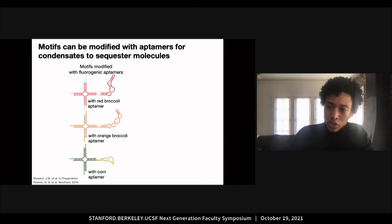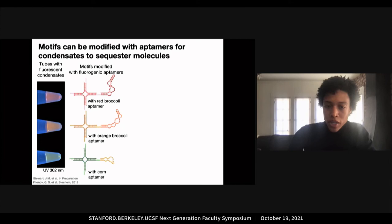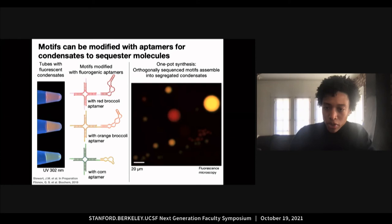I designed motifs with previously characterized fluorogenic aptamers that fluoresce when bound to a fluorogen. Macroscopically, we can observe tubes with individual condensates under UV fluorescing at different wavelengths. Further, I created a multi-condensate system with orthogonally sequenced motifs where individual motifs are programmed to be self-complementary and only interact with themselves. Using a one-pot process, we can add these 12 strands which make up three motifs as well as a fluorogen, and under proper conditions, the system self-segregates into three distinct compartments noted by the red, orange, and yellow condensates. These three compartments are sequence-specific and do not fuse, demonstrating how we can build distinct dynamic RNA compartments for organizing molecules.